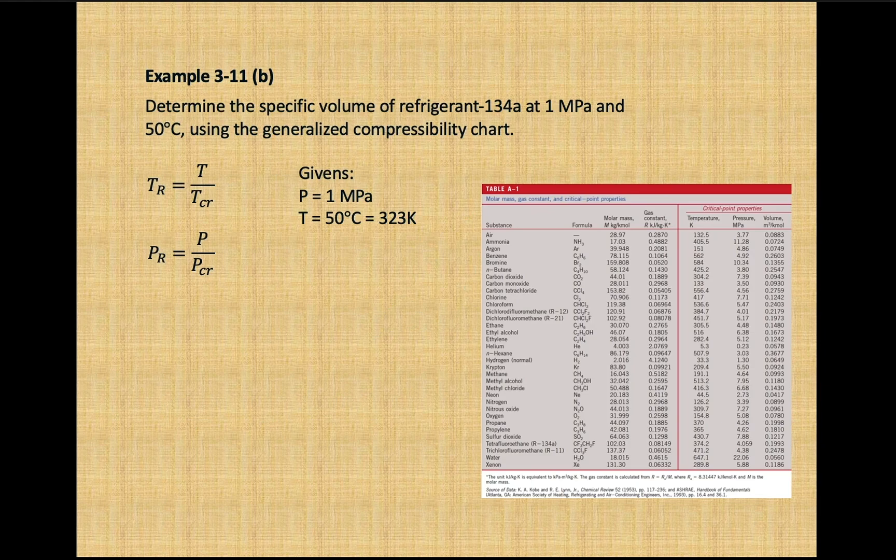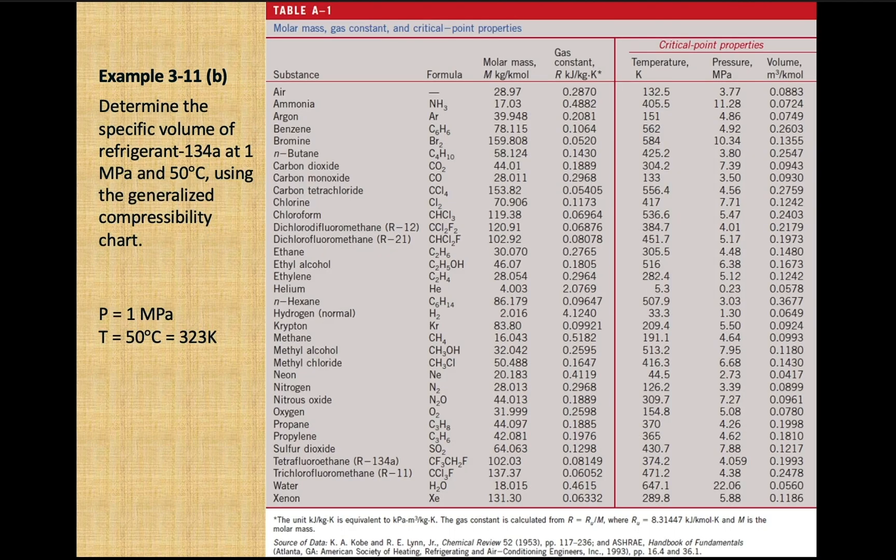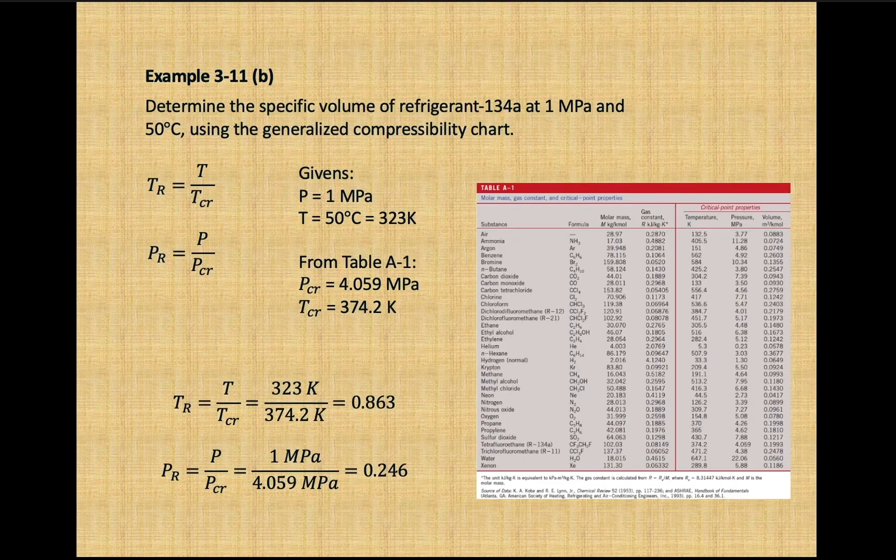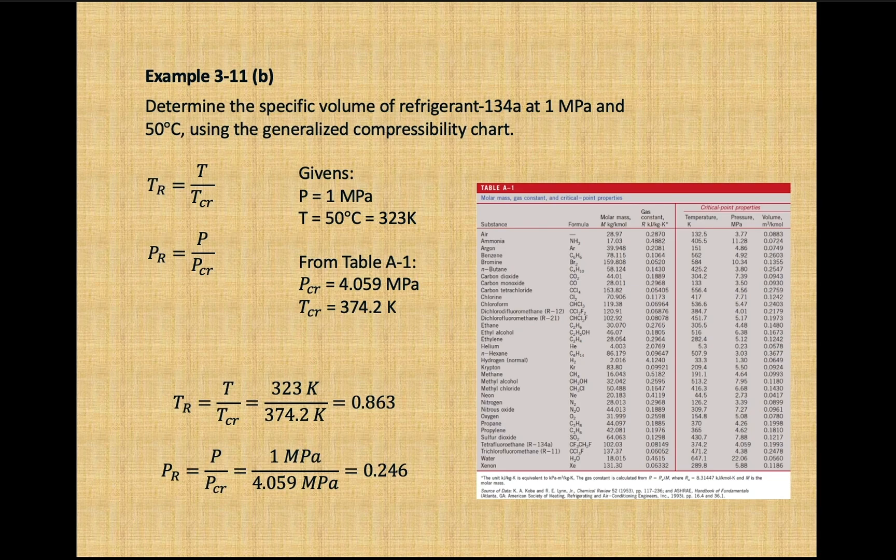Let's look at example 3-11 part b from the textbook. Here are our givens that will be substituted back into the equation. On table A-1, we will find refrigerant and note the critical pressure and temperature values. These are put back into the equation and solved for the reduced pressure and reduced temperature values.